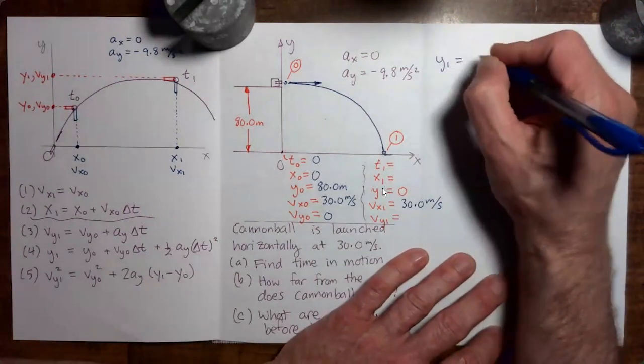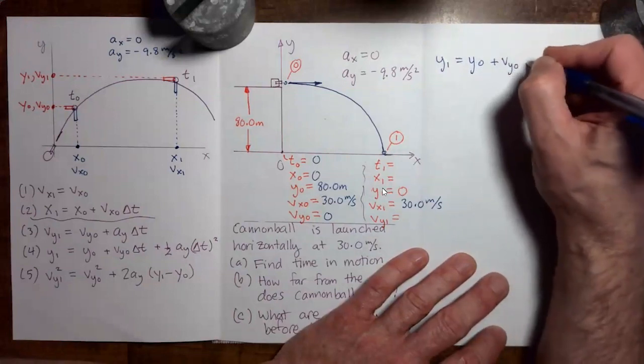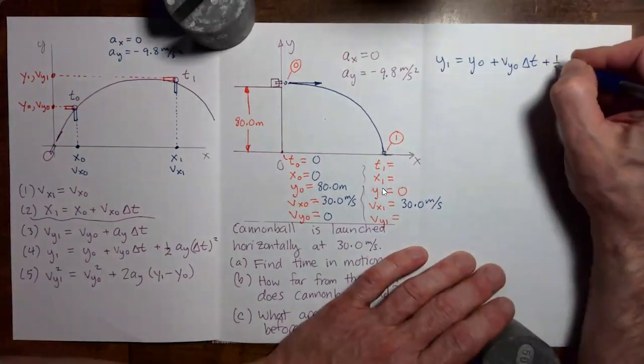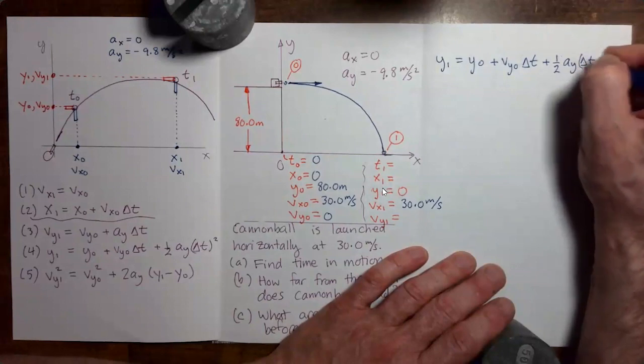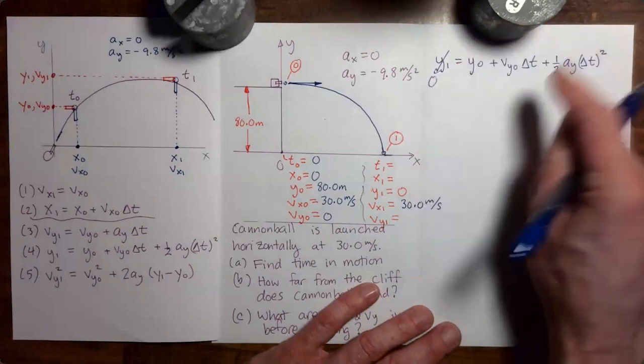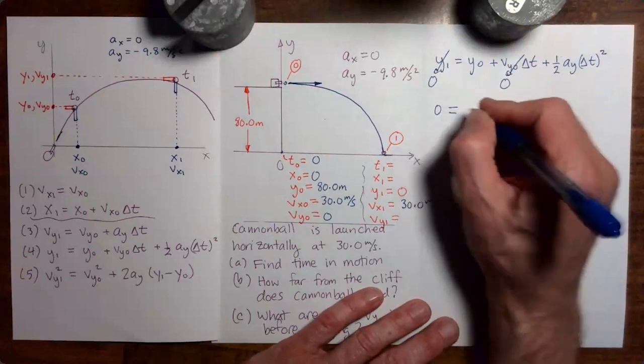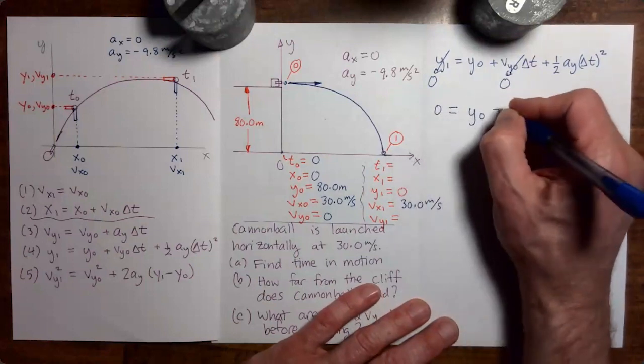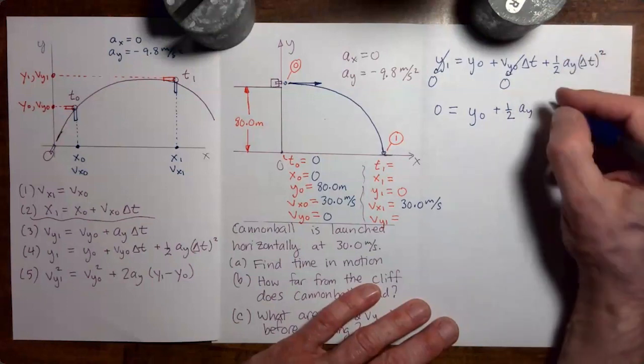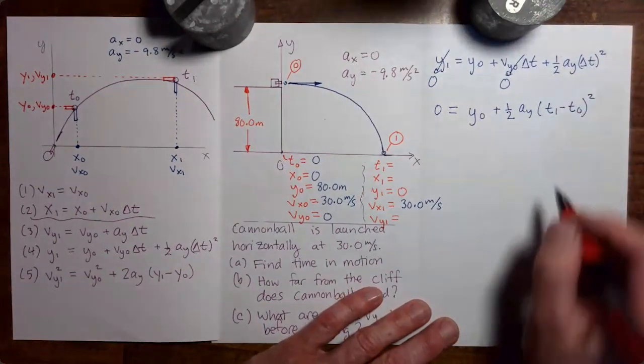So we have y one equals y zero plus vy zero delta t plus one half ay delta t squared. y one is zero, vy zero is zero. So let's look at what we have left over. We have zero equals y zero plus one half ay. Now let me expand out that delta t. That delta t is t one minus t zero, that is squared, but t zero is zero.